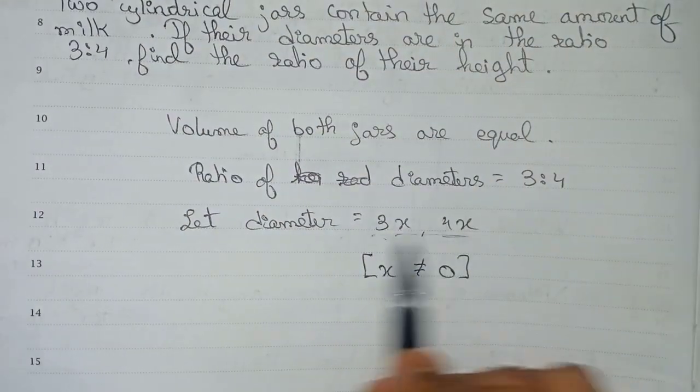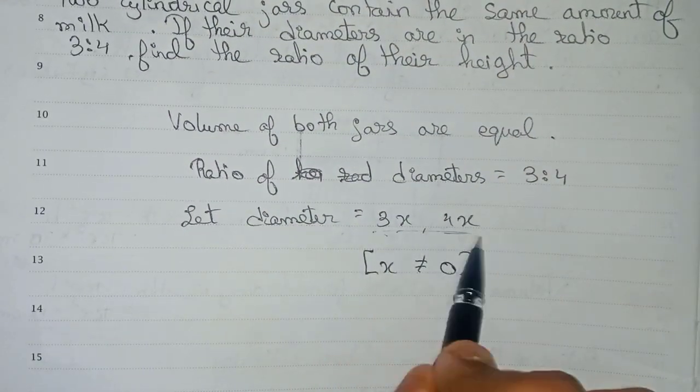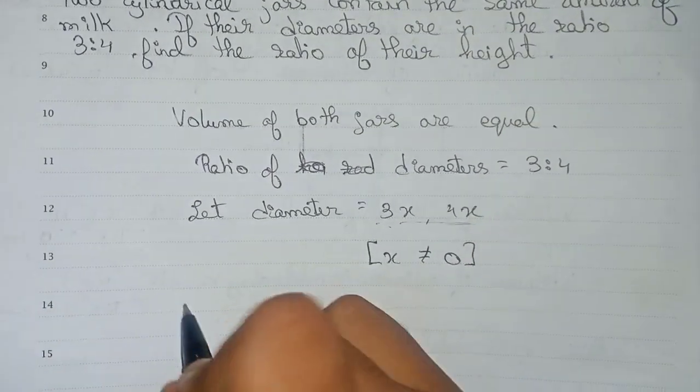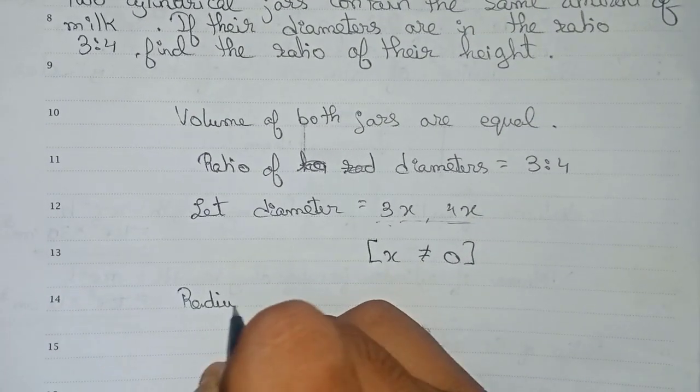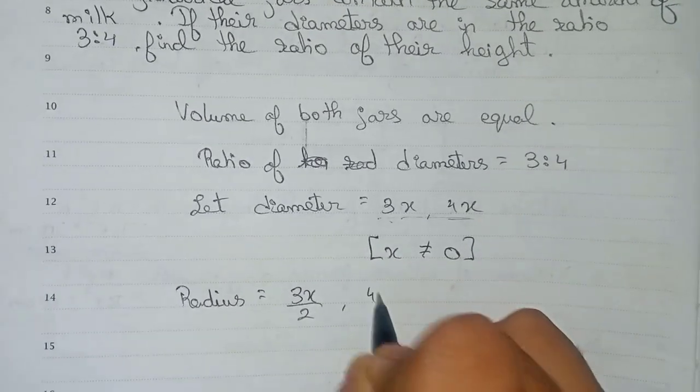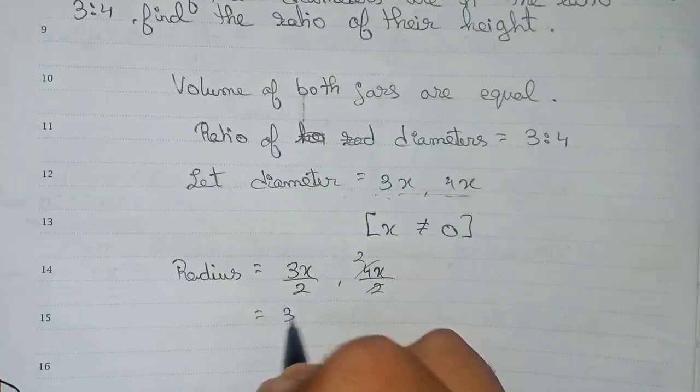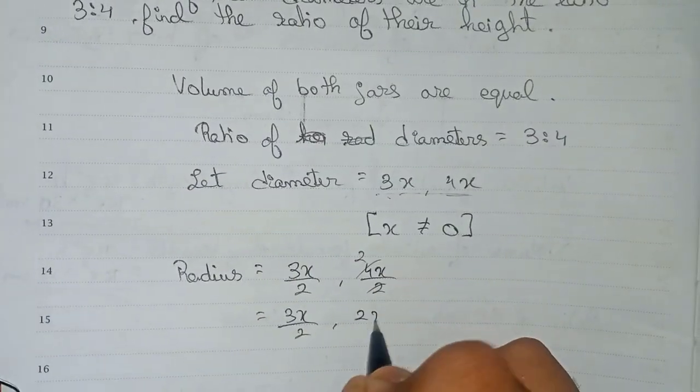So radius will be diameter by 2. So 3x by 2, 4x by 2 which becomes 2x. So radius will be 3x by 2, 2x.